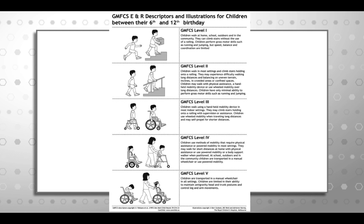This image gives another nice way to visualize the GMFCS levels for children between their sixth and 12th birthday. Kids at level one can run and jump and carry things up and down the stairs, though they're just a little slower and less coordinated than their peers. Going all the way down to level three kids who use wheelchairs and walkers, and level five kids who are transported. There's a whole range of levels in between.